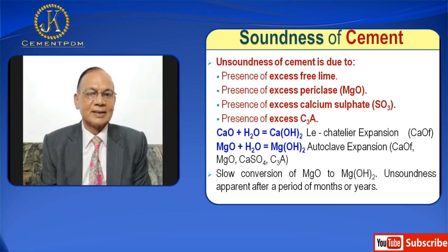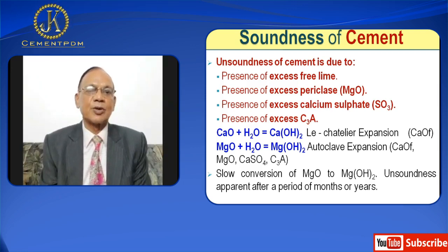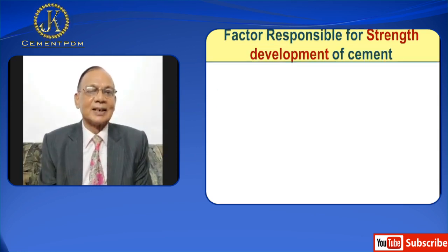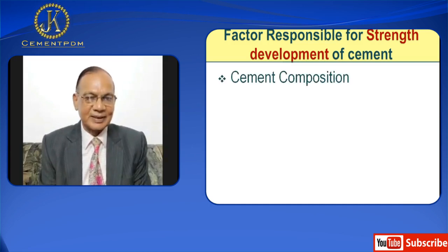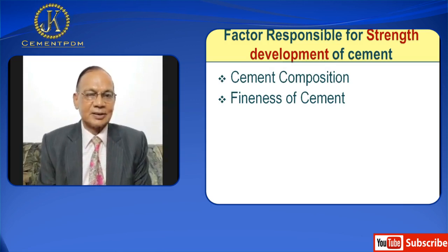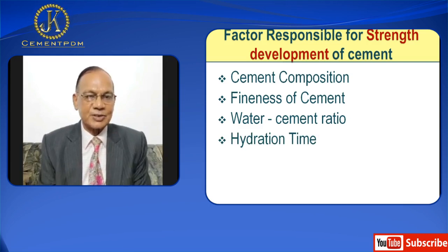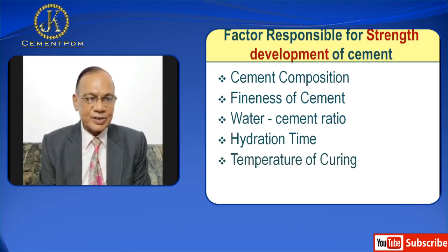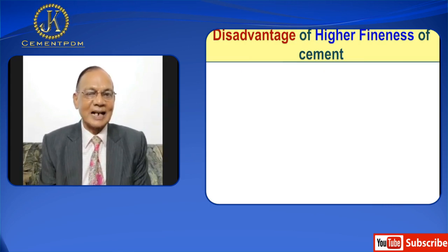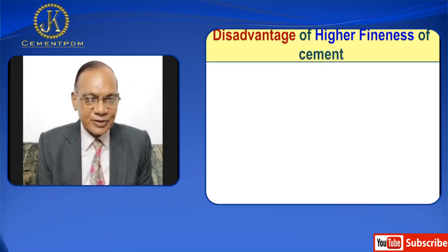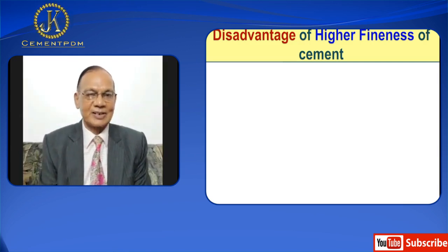Now let us briefly discuss the factors which are responsible for strength. Just bullet points: factors responsible are cement composition — that is proportion of C3S, C2S, C3A, etc. — then fineness of cement, then water-cement ratio, then hydration time, then temperature of curing. I am not going to discuss in detail; maybe in a separate video I will discuss in detail.